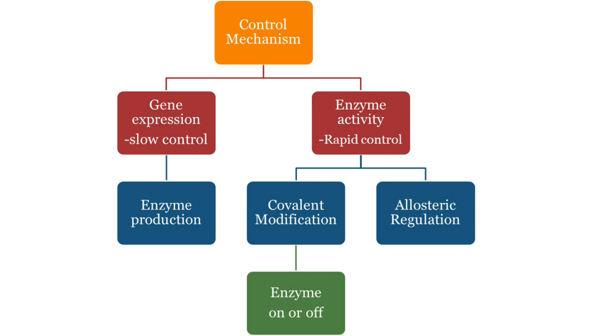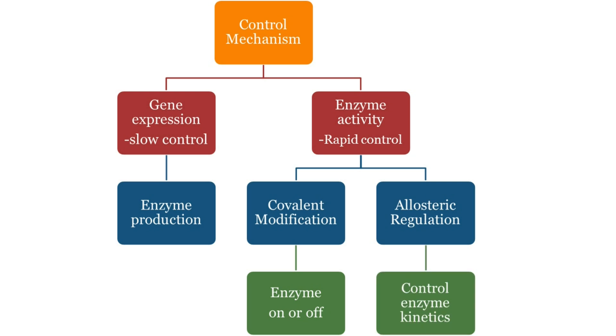Covalent modification is turning enzymes on and off, such as glycogen phosphorylase. Allosteric regulation is fine-tuning through kinetic control. An example would be phosphofructokinase.